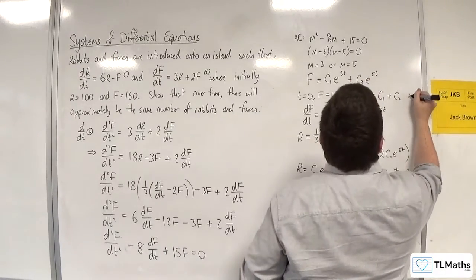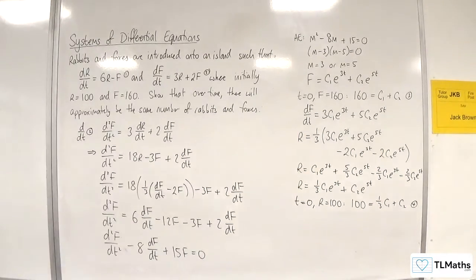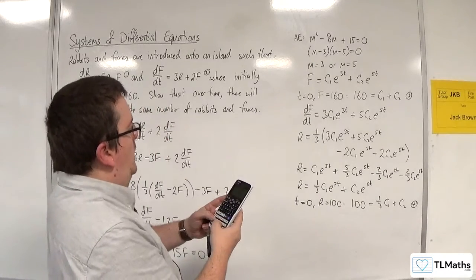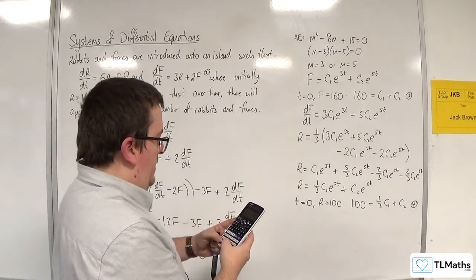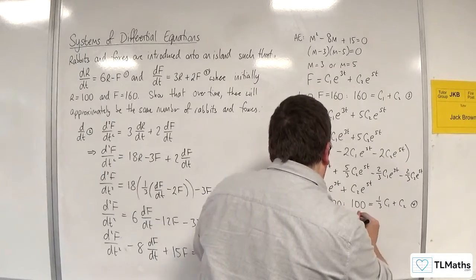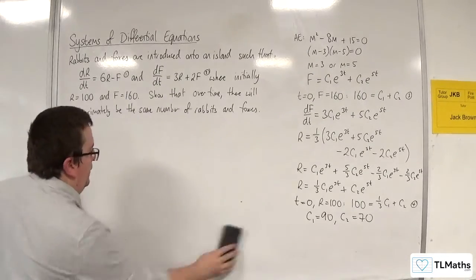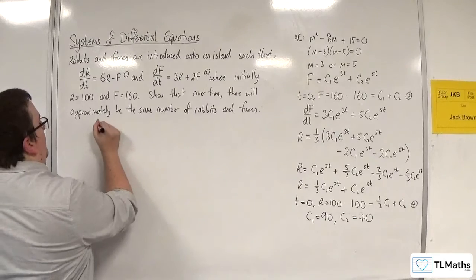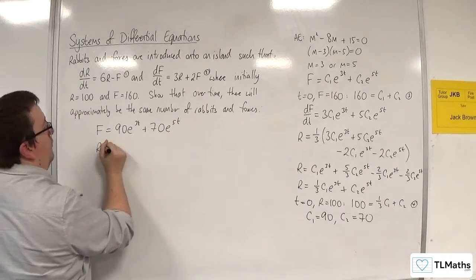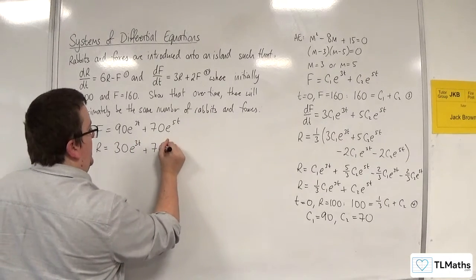Calling the f initial condition equation 3 and the r initial condition equation 4, solving these simultaneous equations gives c₁ = 90 and c₂ = 70. Therefore the number of foxes is f = 90e^(3t) + 70e^(5t), and the number of rabbits is r = 30e^(3t) + 70e^(5t).